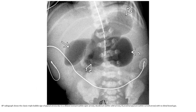AP radiographs show the classic double bubble sign of duodenal atresia due to a dilated stomach and proximal duodenum, with no distal bowel gas.